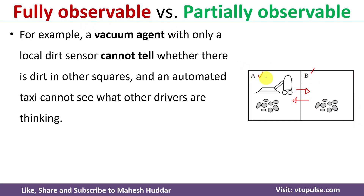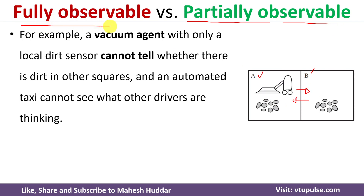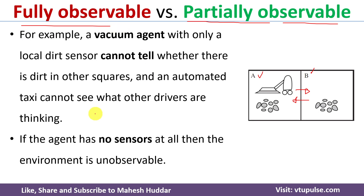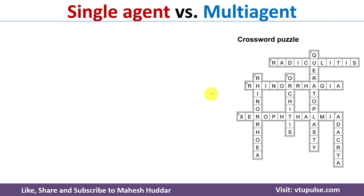If the agent can sense only location A or location B based on its current position, then it is called partially observable. In this case it can sense only either A or B, which is why it is called a partially observable environment. If sensors are placed such that both A and B can be sensed, it becomes fully observable. If there are no sensors at all, it is called an unobservable environment.